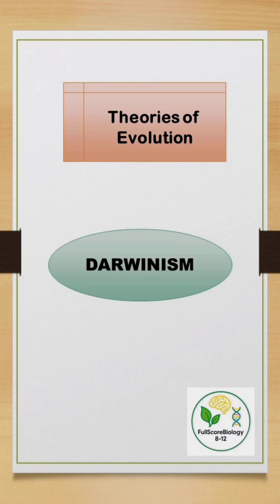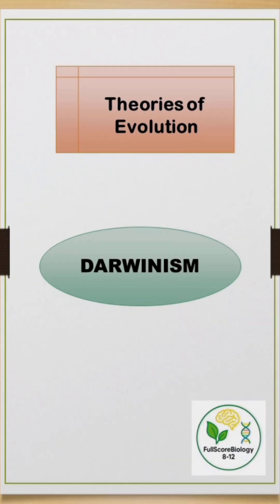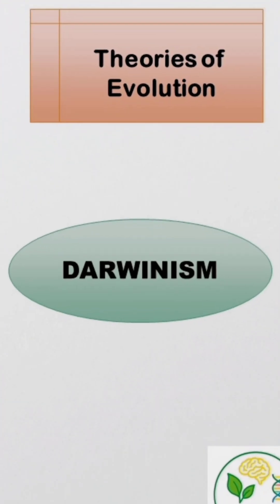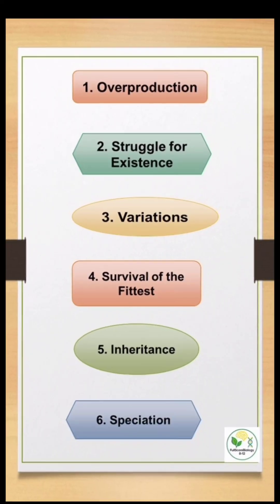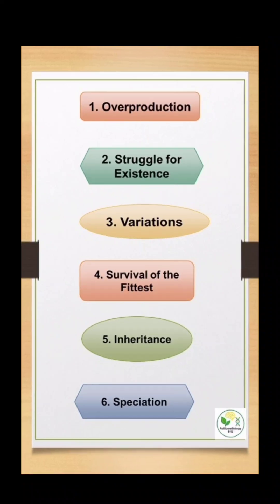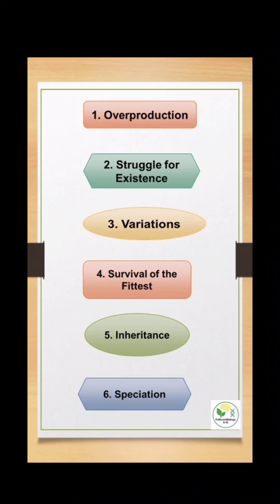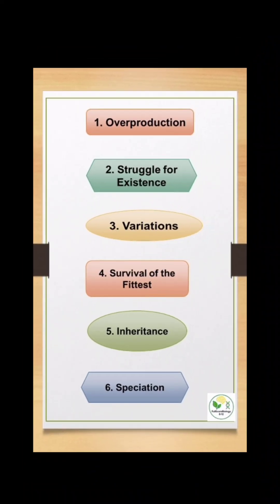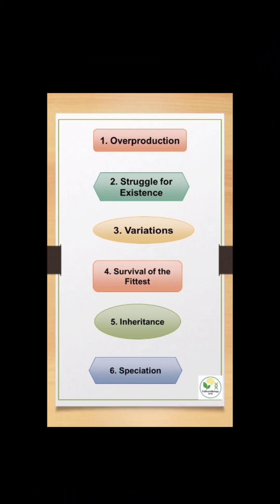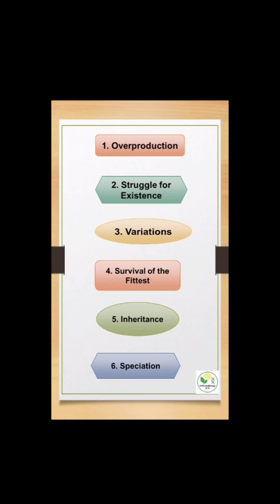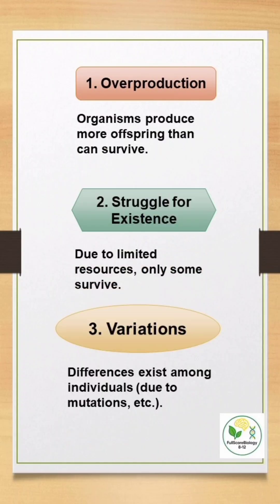There are so many theories related to evolution. One among them is Darwinism. The main concepts of Darwin include overproduction, struggle for existence, variations, survival of the fittest, inheritance, and finally speciation.